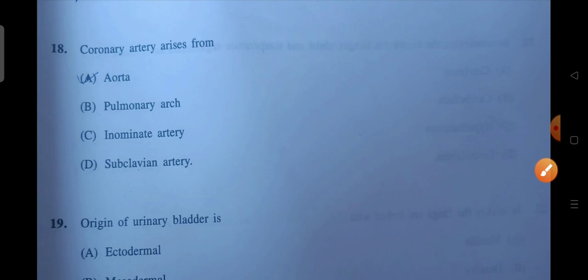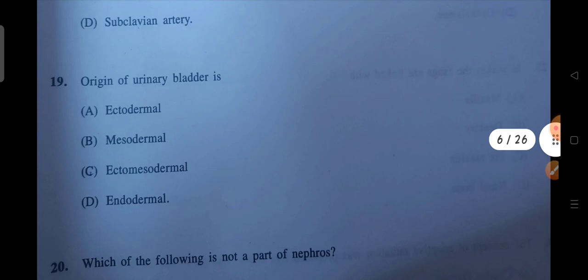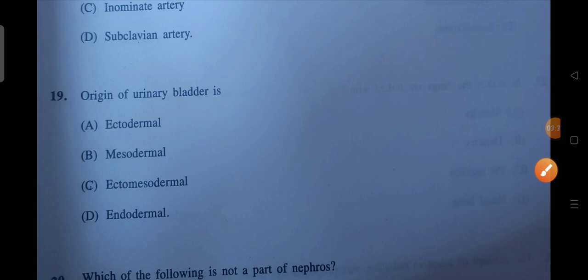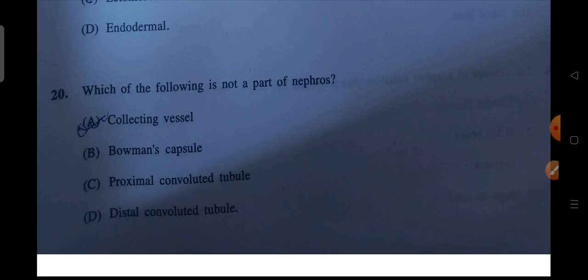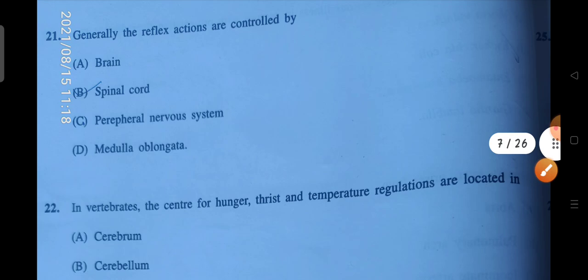Next is coronary artery arises from. So where does it arise? This is from your aorta. It arises from your aorta. Next question is origin of urinary bladder is. So that is D, endodermal. Next is which of the following is not the part of nephrons? So which is not the part? So A, collecting vessels is the correct answer.